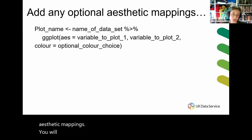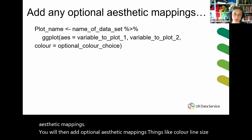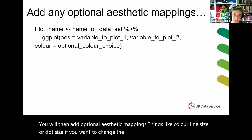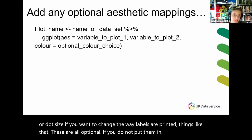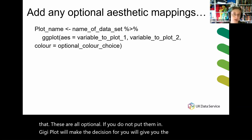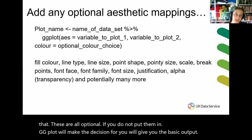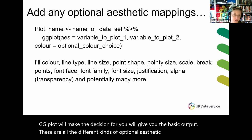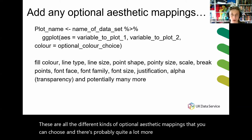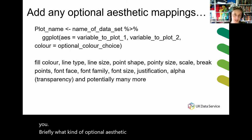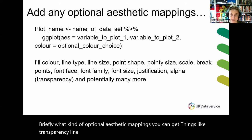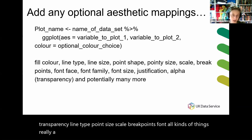You will then add optional aesthetic mappings — things like colour, line size or dot size, if you want to change the way labels are printed, things like that. These are all optional. If you do not put them in, ggplot will make the decision for you and give you the basic output. There are quite a lot of optional aesthetic mappings you can choose from: things like transparency, line type, point size, scale, break points, font — all kinds of things. ggplot is very powerful and gives you a lot of options.